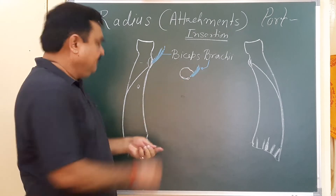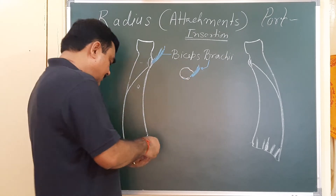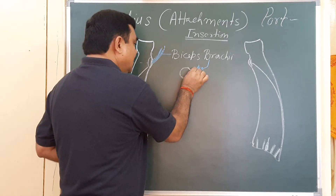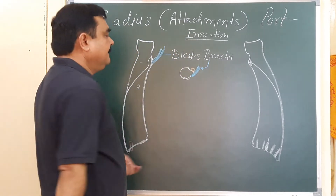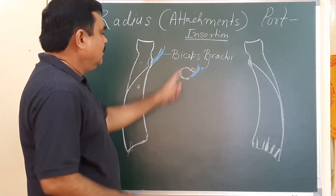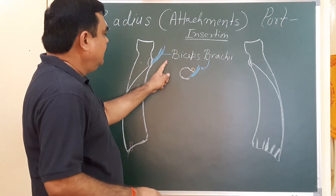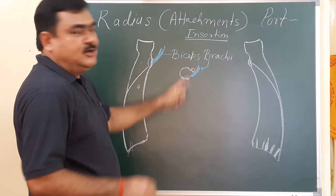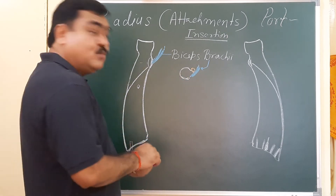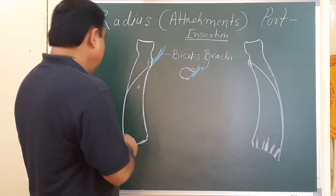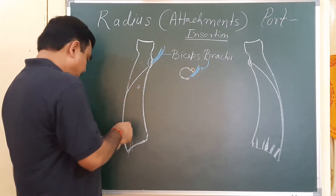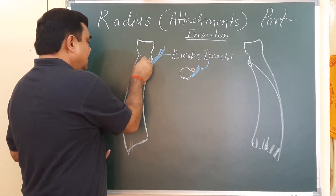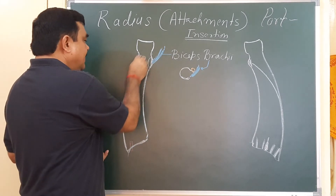Anteriorly, in the smooth part, there is a bursa. So this is the insertion of biceps brachii on the posterior part of the radial tuberosity.